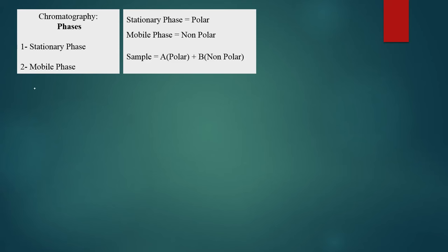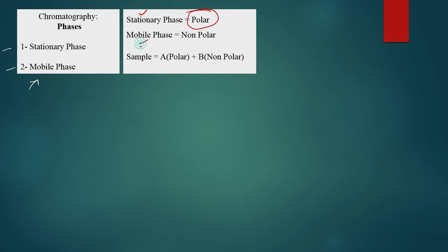We have two phases in column-based techniques: stationary and mobile. In a normal phase, the stationary phase is polar and the mobile phase is non-polar. We have a sample in which there are two components A and B. We use chromatography to separate A and B. Component A is polar and component B is non-polar.